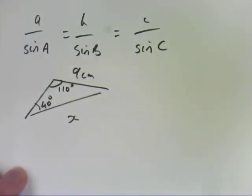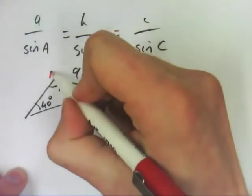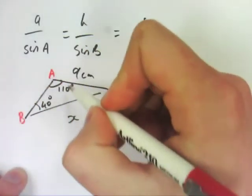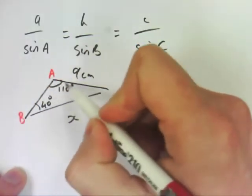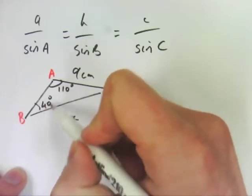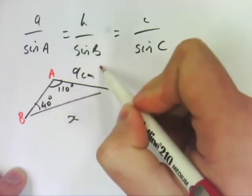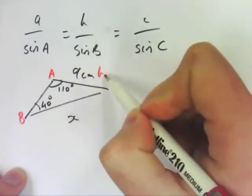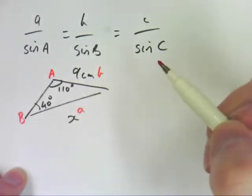So we're just going to label some sides. Let's say this is A and this is B. So that means that 110 is angle A, and that 40 is angle B. That means this side over here, this 9, is side B, and this X is actually side A.